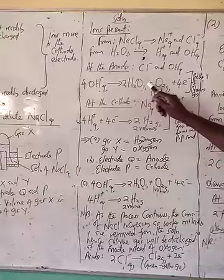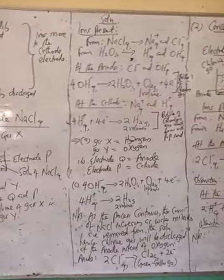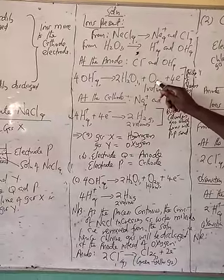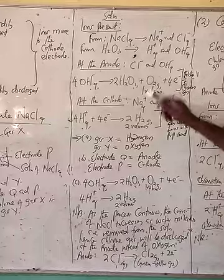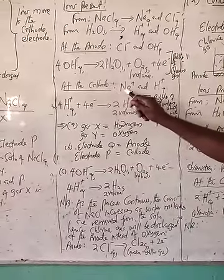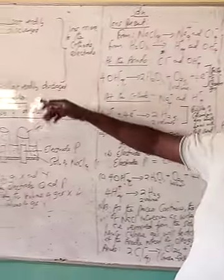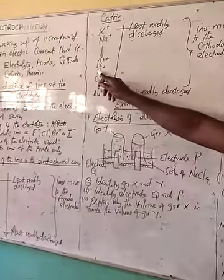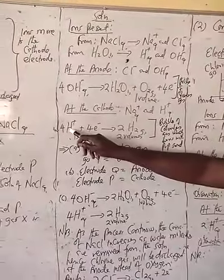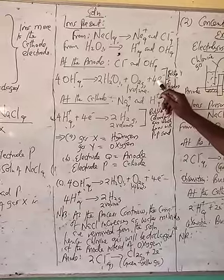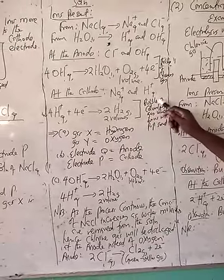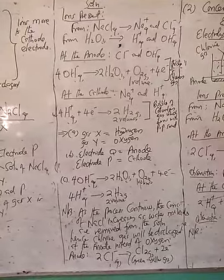Hydroxide will discharge from water to produce oxygen and some electrons. If you are asked to state the observation at the anode, you talk of bubbles of colorless gas that relight a glowing splint, produced at the anode, because it is oxygen gas. One volume of oxygen gas is produced plus four electrons. At the cathode, sodium and hydrogen ions will move there. Comparing the two ions, hydrogen ion will discharge in preference to sodium ion. The hydrogen ion will receive the four electrons produced at the anode to produce two volumes of hydrogen gas. At the cathode, you will observe bubbles of colorless gas which burns with a pop sound — that is hydrogen gas.